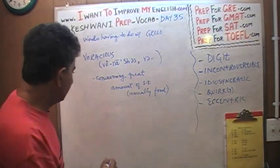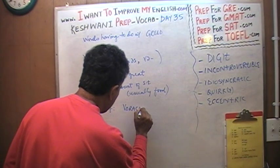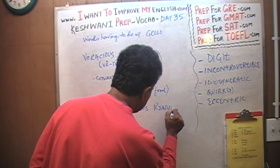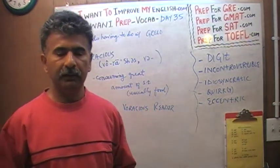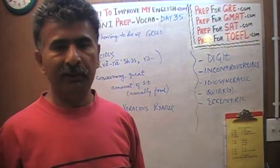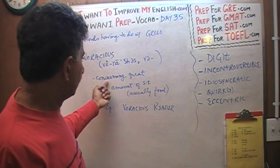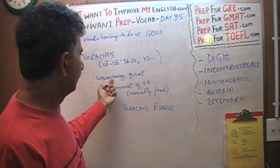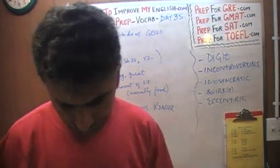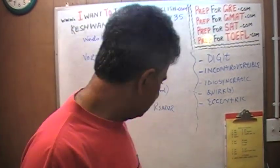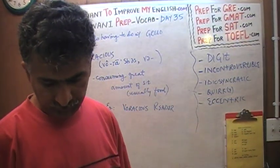For example, you might speak of somebody as being a voracious reader. So if a person reads a lot and they read a great deal, you can describe them as a voracious reader — here you are using the word in a more metaphorical meaning. Because usually it is used in the context of food: a voracious appetite, meaning consuming a great amount of food.